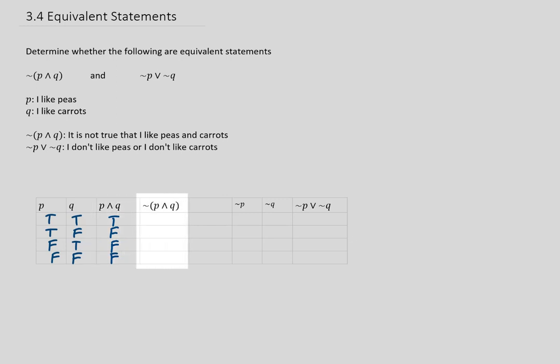Now we want to negate that conjunction for this column, so our answers for this first statement are just going to be the negations of the previous column. So false, true, true, true. All right, now let's work on the second statement.